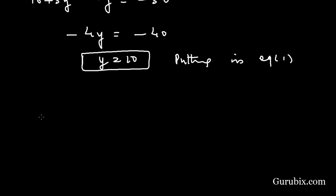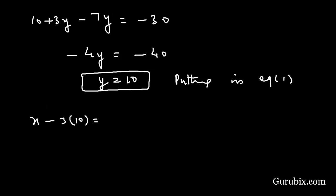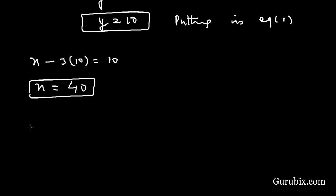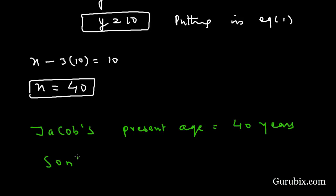Now substituting Y equals ten into Equation 1: X minus three times ten equals ten, so X minus thirty equals ten, which gives X equals forty. Therefore, Jacob's present age is forty years and his son's present age is ten years. This is the solution to the question. Thank you.